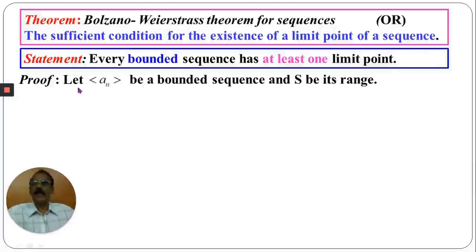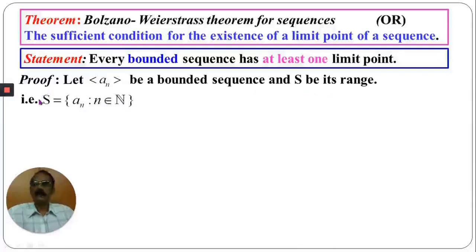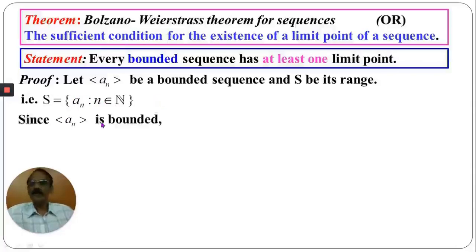Let the sequence a_n be a bounded sequence and S be its range, where S equals the set of all elements of the sequence a_n for n belonging to the natural numbers. Since a_n is bounded, S is also bounded.